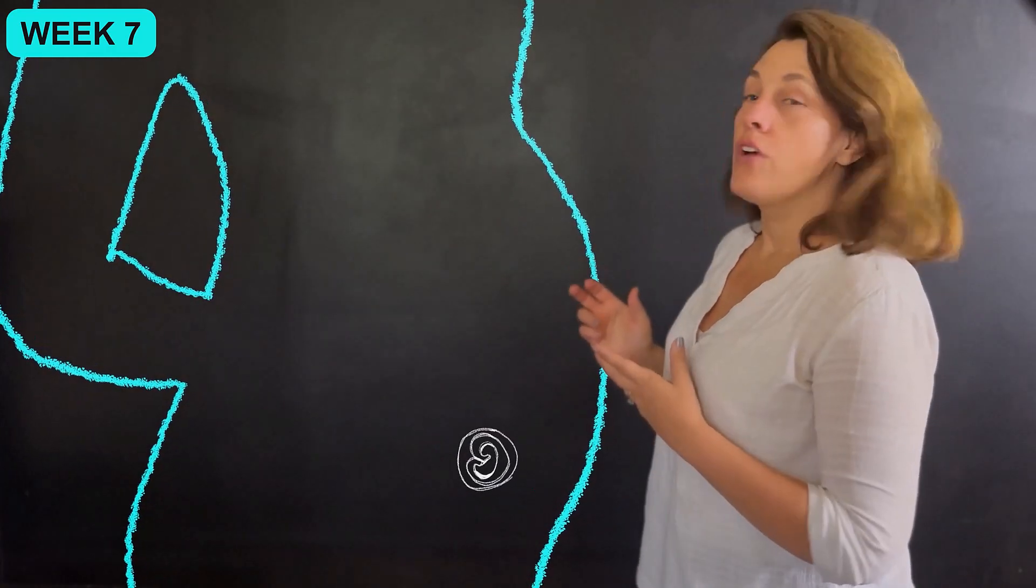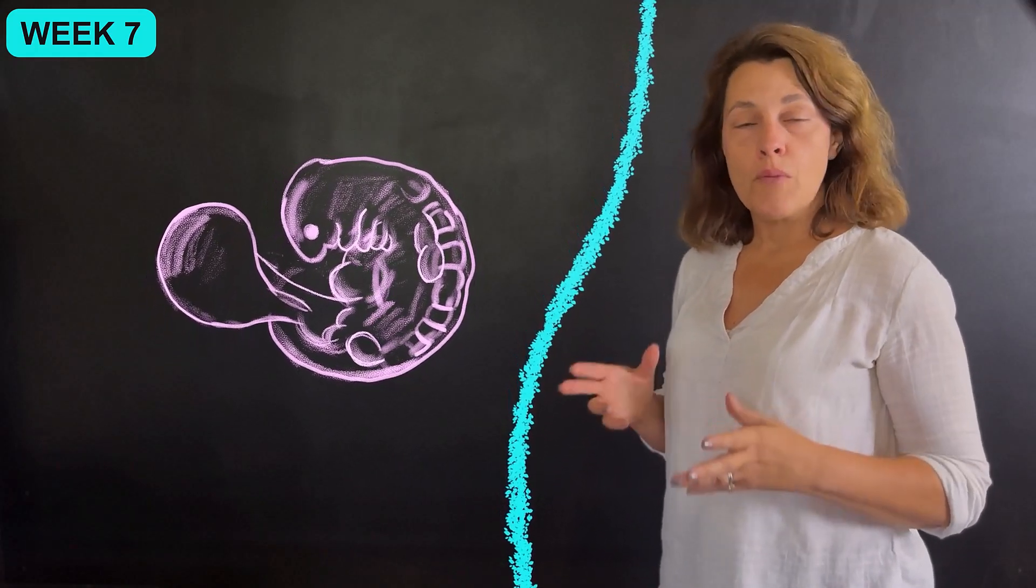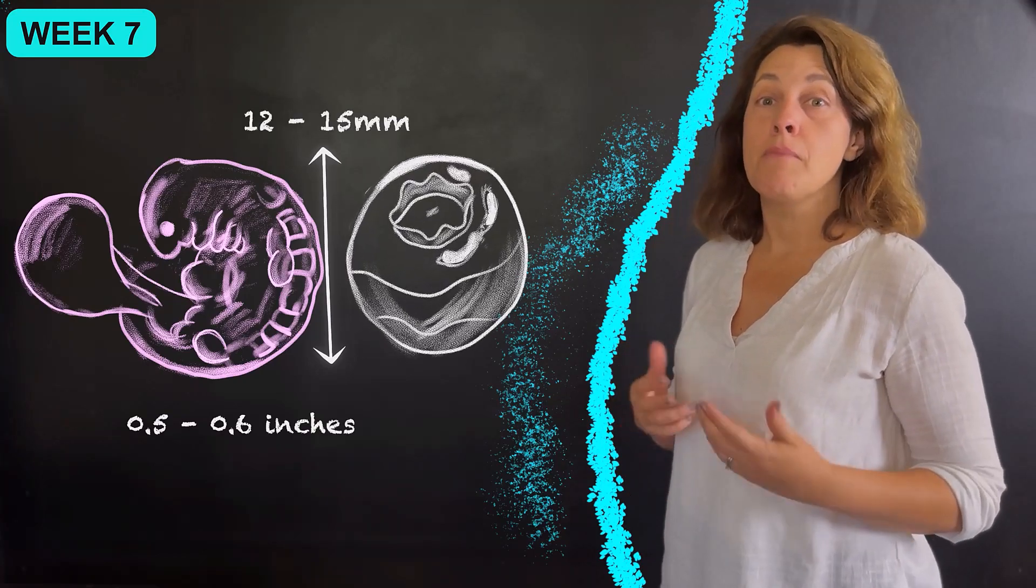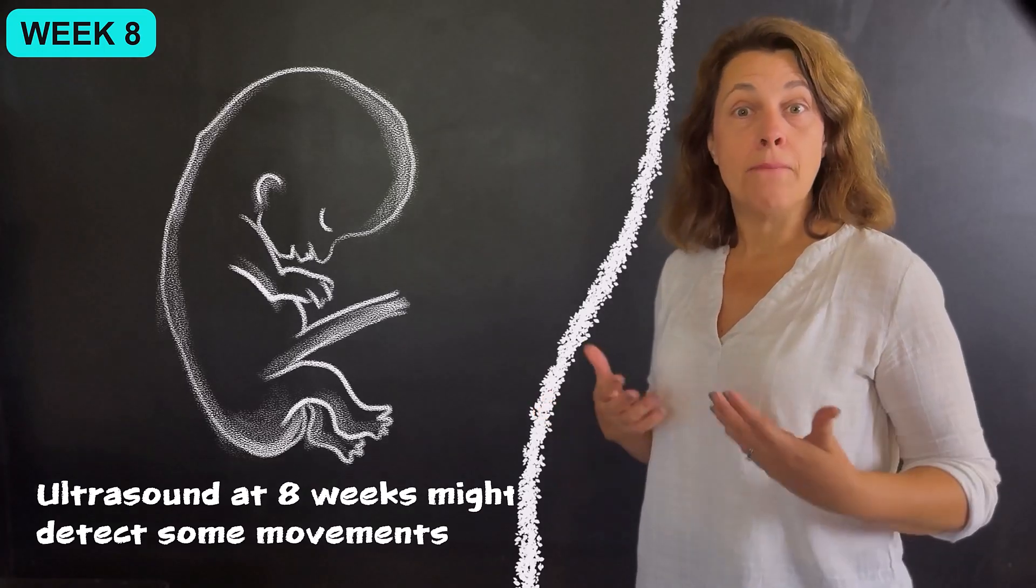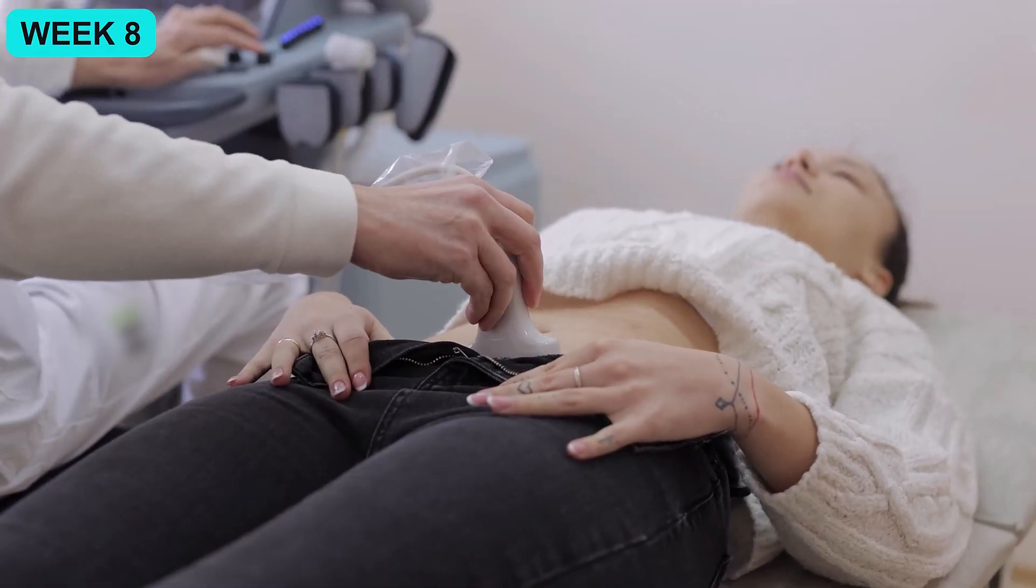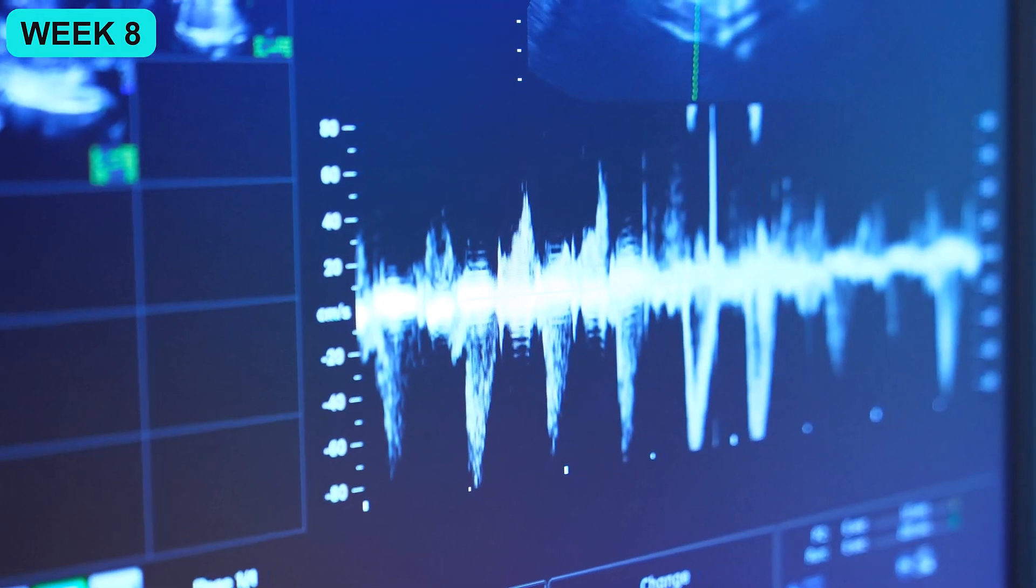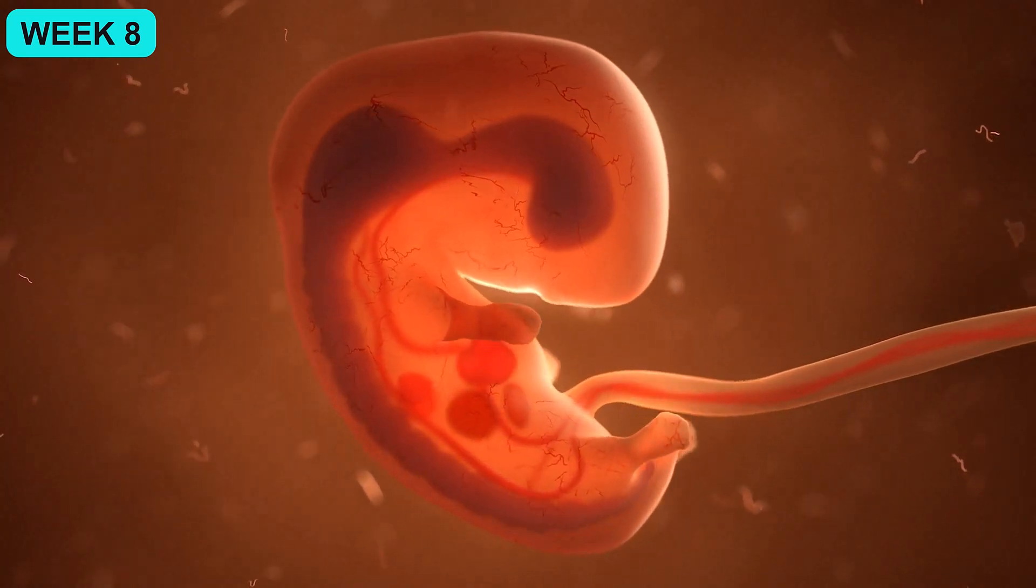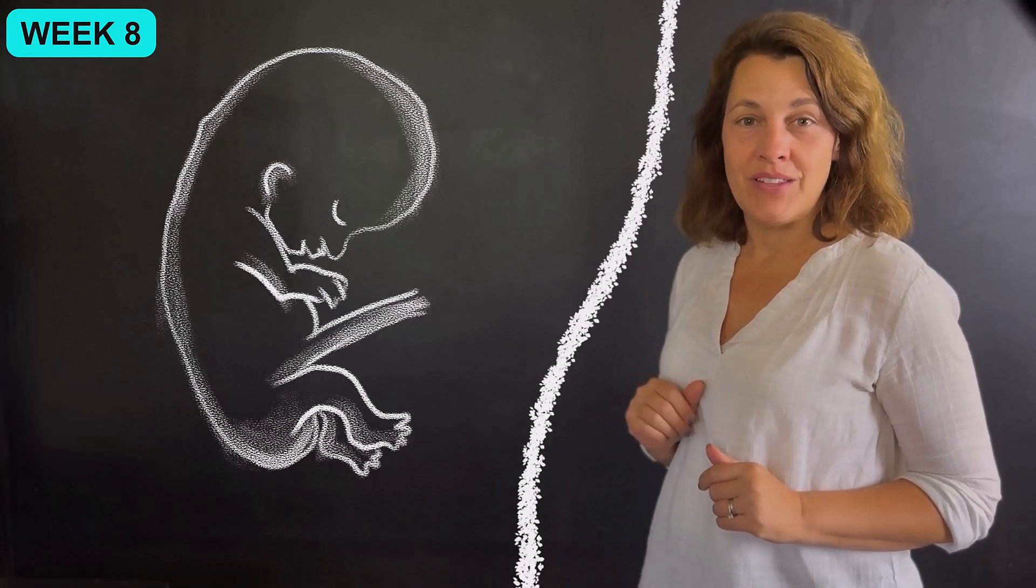The baby is called an embryo at this point and it's measuring about the size of a blueberry, or approximately 0.5 to 0.6 inches or 12 to 15 millimeters in length. An ultrasound at eight weeks of pregnancy might detect some movement with the embryo. This movement is due to muscle and nerve formation and the developing reflexes. Now the embryo shape, which has been a C, is starting to straighten out a bit, and this week is when the baby loses their tail.